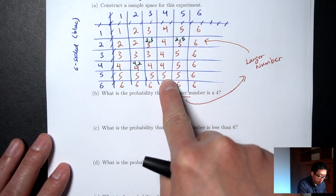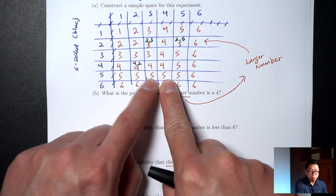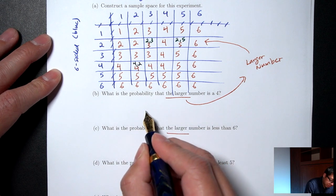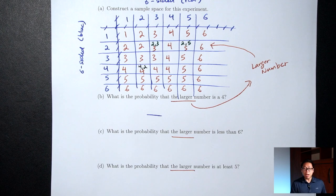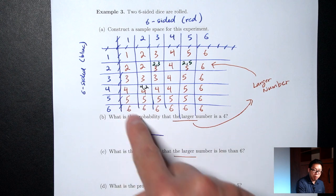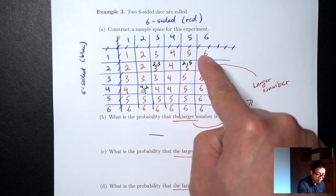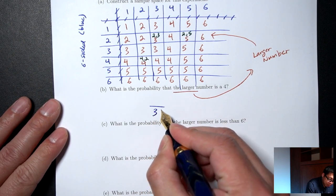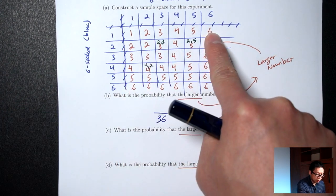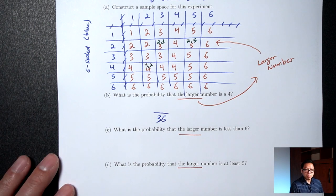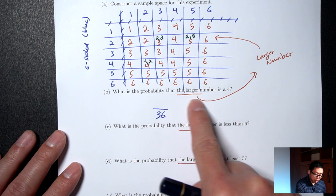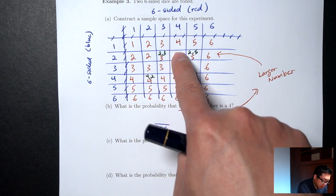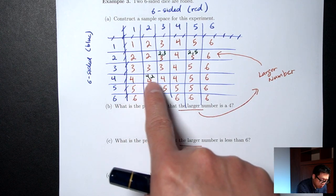Part B: what's the probability that the larger number is 4? The sample space has 6 × 6 = 36 boxes on the inside. How many of them have a larger number of 4? Looking at the red numbers in the table, counting those equal to 4: 1, 2, 3, 4, 5, 6, 7 — that's 7 outcomes. Probability is 7/36.